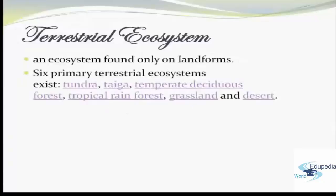We have six primary terrestrial ecosystems. First, we have the tundra; second, taiga; third, temperate deciduous forest; fourth, tropical rainforest; fifth, grassland; and last, we have the desert.